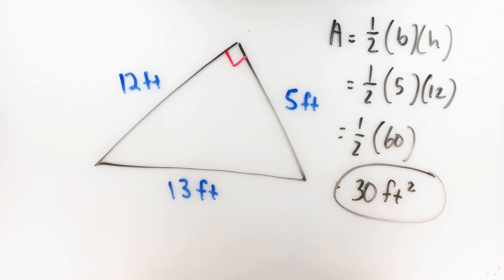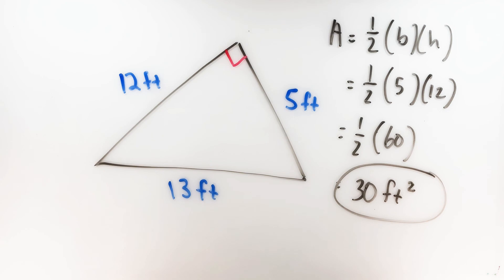That's all for this one. Stay tuned next week as we find areas of other more irregular quadrilaterals like trapezoids and kites. You can find that video right up there if it's already been posted. Thumbs up if this was helpful, and consider subscribing to the Geomestic channel for more videos just like this. Thanks for watching — we'll see you next time.